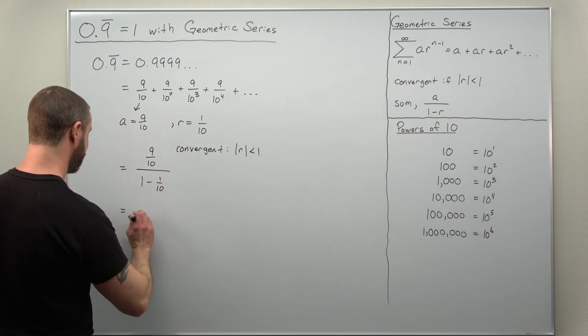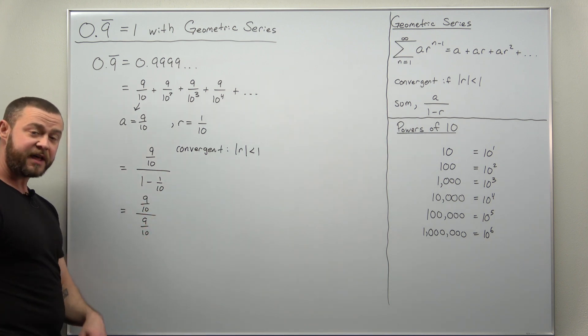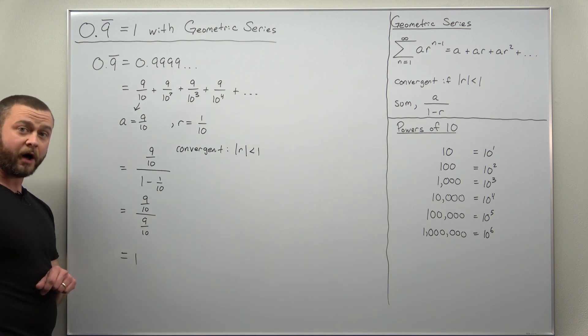And if you simplify in that denominator, 1 minus 1 tenth is 9 over 10. We have a number divided by itself and we get 1.